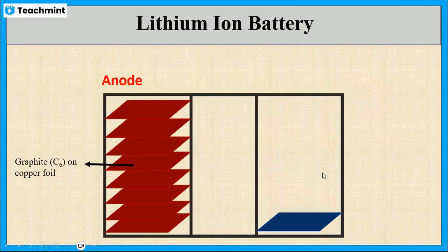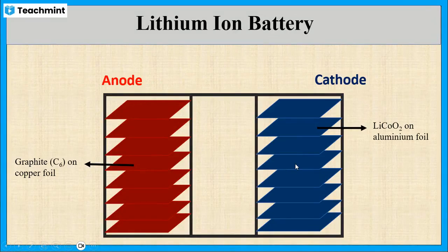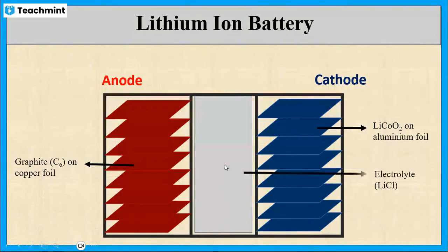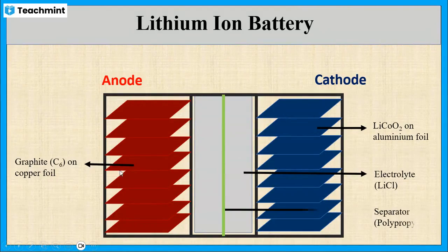The cathode is made up of aluminum foil layers on which lithium cobalt oxide is placed. The electrolyte uses lithium chloride dissolved in an organic solvent like propylene carbonate and ethylene carbonate. These two electrodes are separated using a separator which is made up of polypropylene.